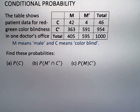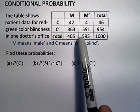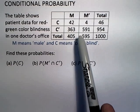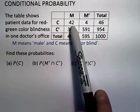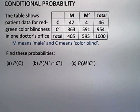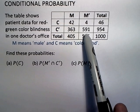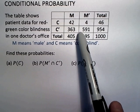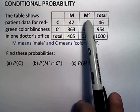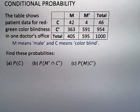This problem says the table shows patient data for red-green colorblindness in one doctor's office. M here means male and C means colorblind. For instance, there are 42 colorblind males in this doctor's practice, there are 591 non-males that aren't colorblind in practice, and there are a total of a thousand patients in this one doctor's office.